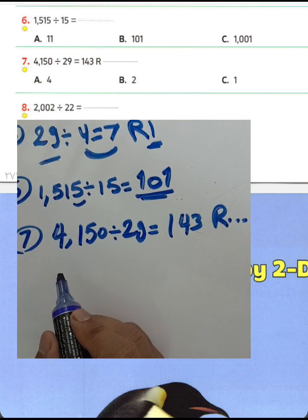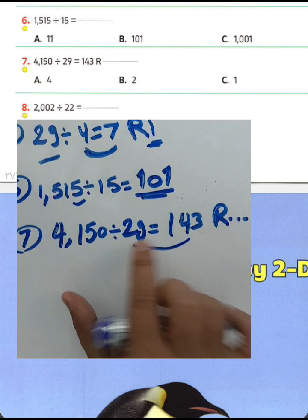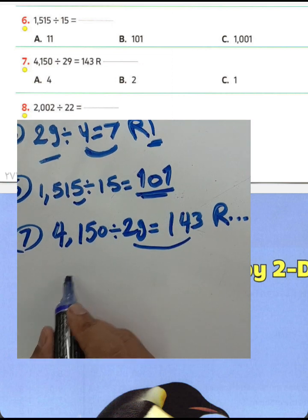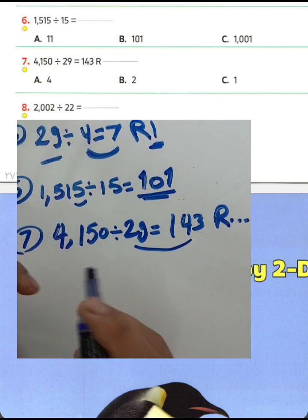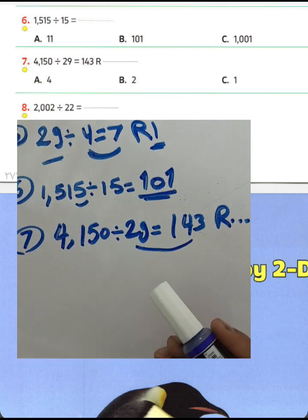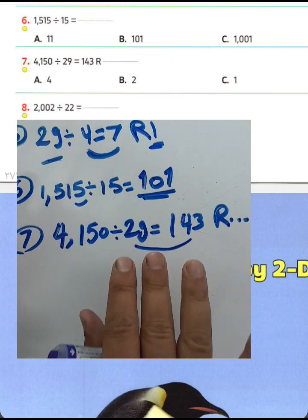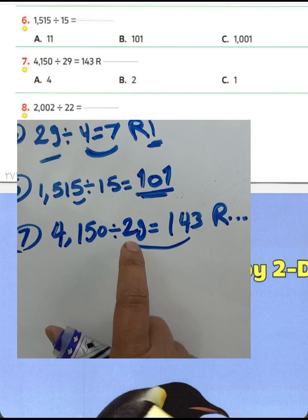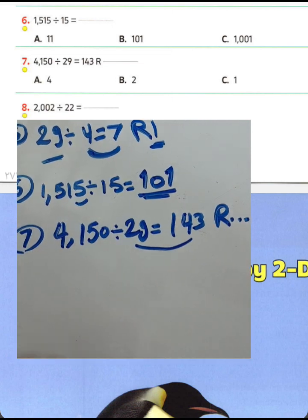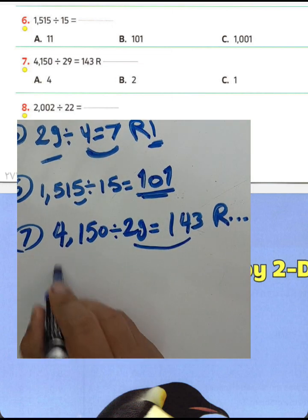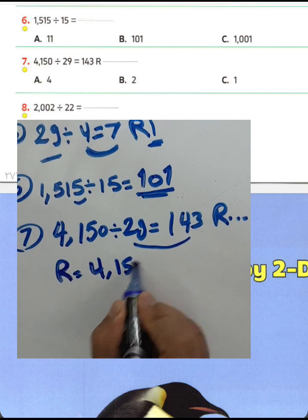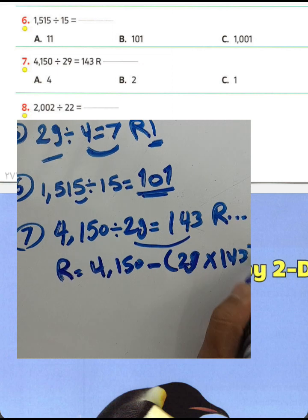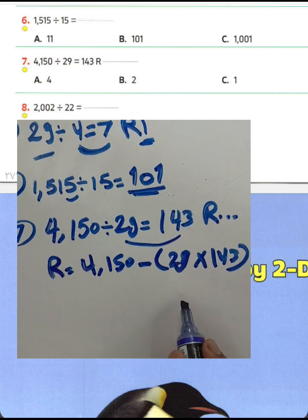Question number 7: 4150 divided by 29 equals 143 and remainder blank. We can find the remainder by multiplying the divisor by the quotient and subtracting the result from the dividend. So the remainder equals 4150 minus the multiplication of 29 and 143.